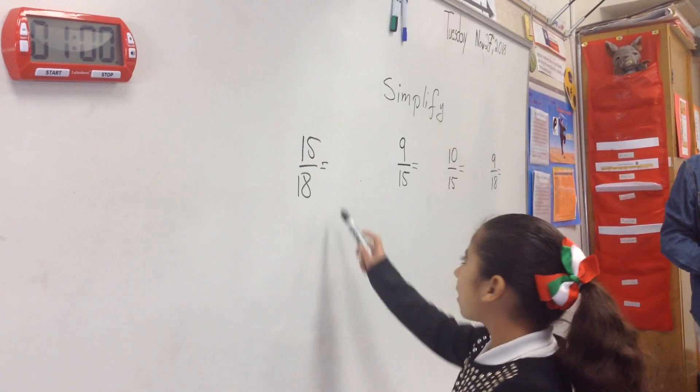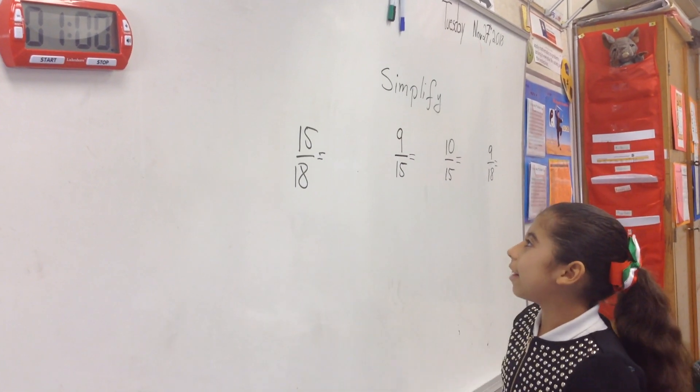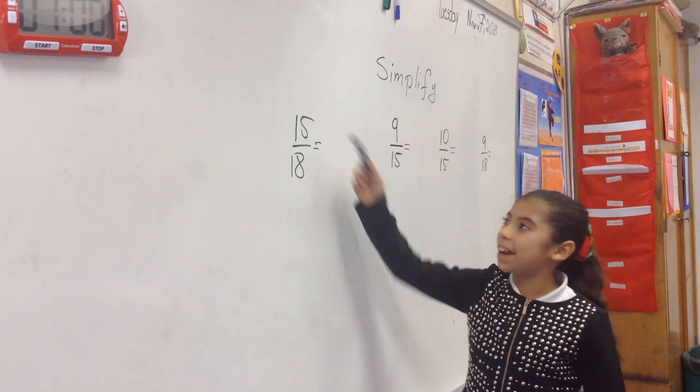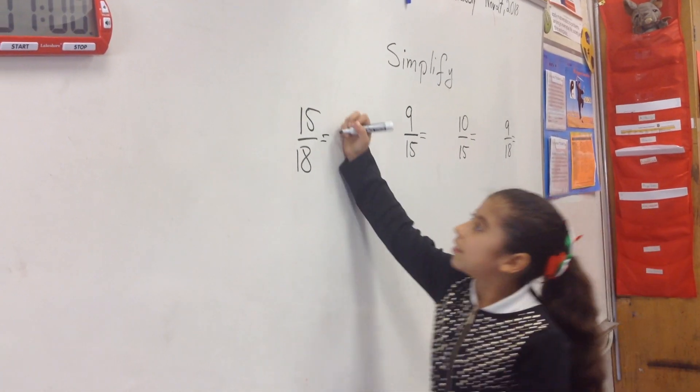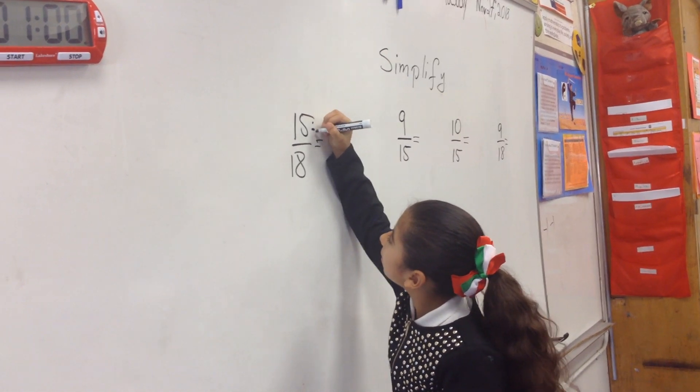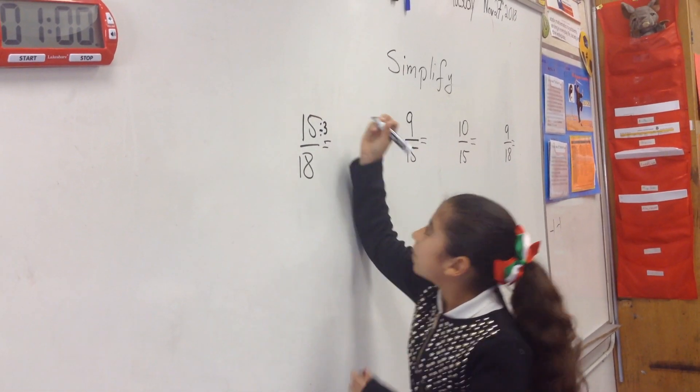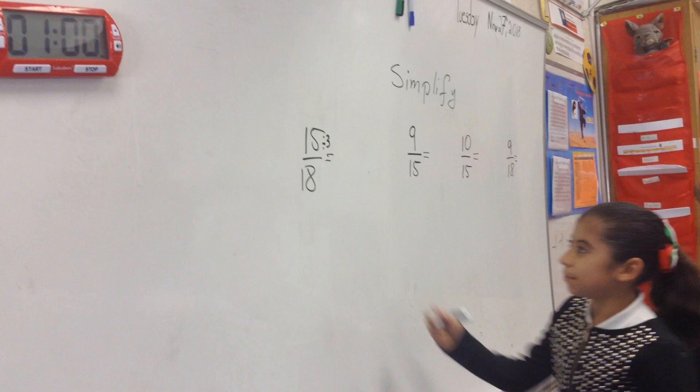15, 18 - it goes to something. I will divide 15 divided by 3. 15 divided by 3 is 5.